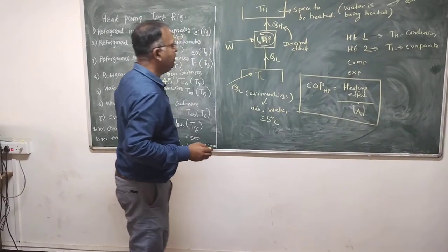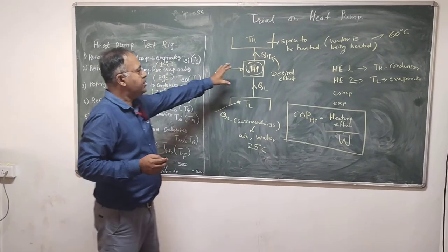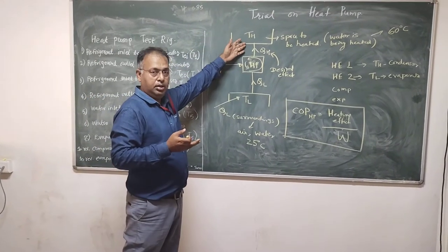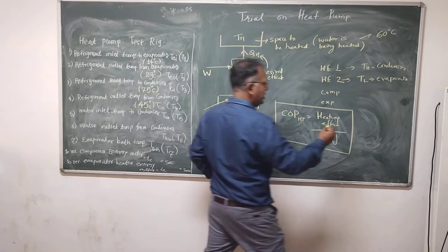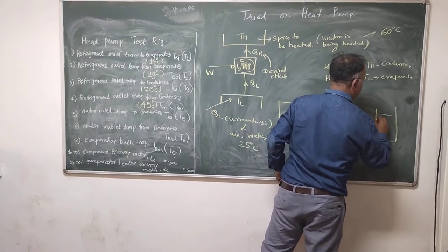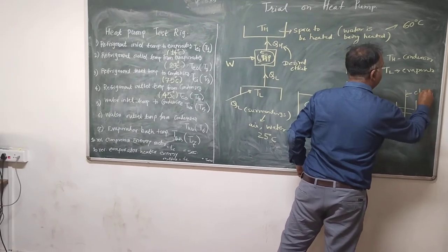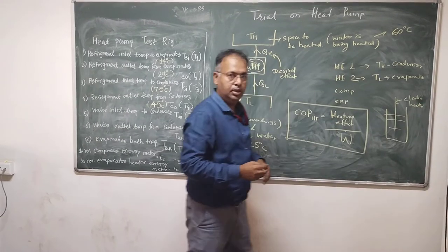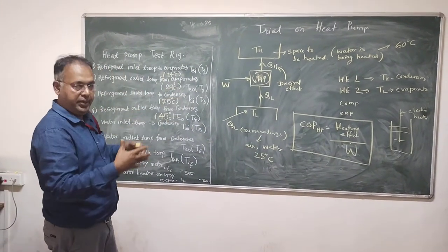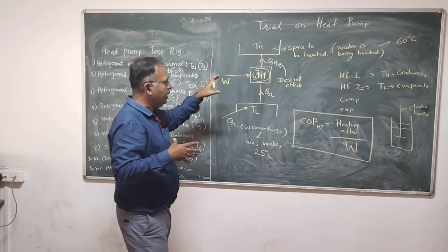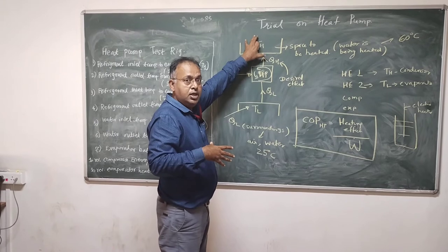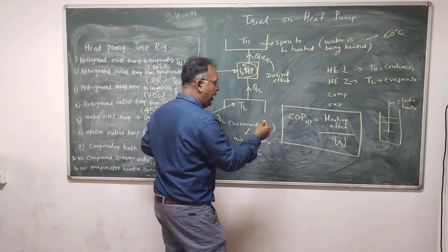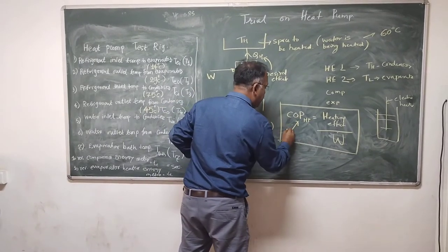Now, the interesting point is why we require a system as elaborate as this. Why do we require a refrigeration system for heating the water? You know that water can also be heated by simply using an electric heater — take an electric coil and heat the water. This is one way. But the advantage of using the refrigeration system is that the coefficient of performance of a heat pump is greater than 1.